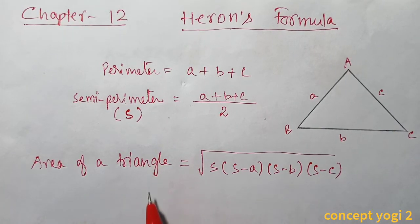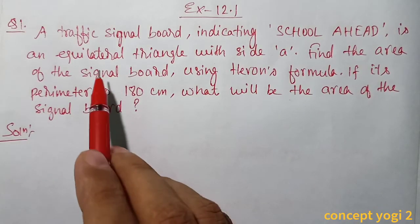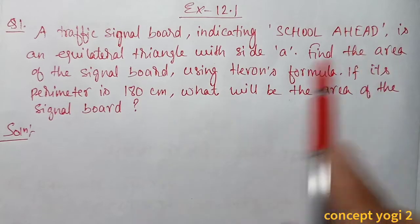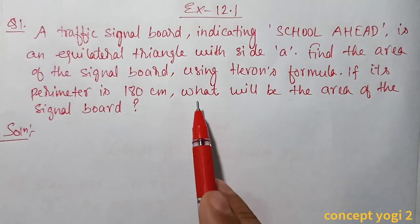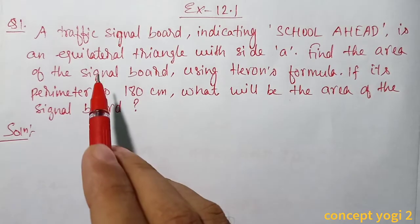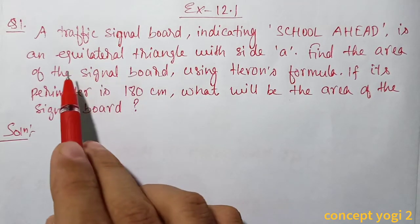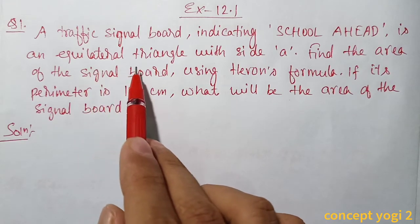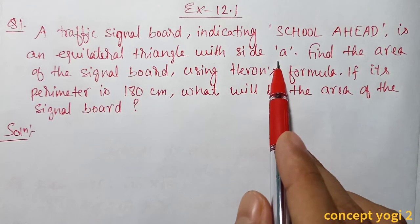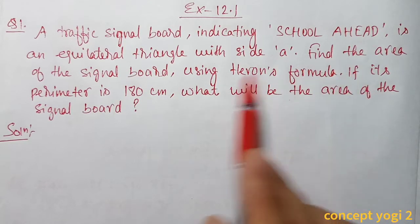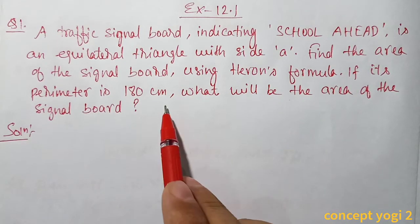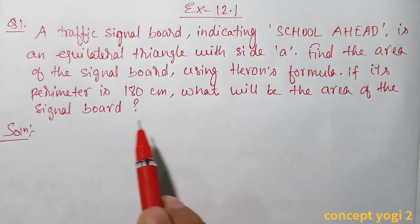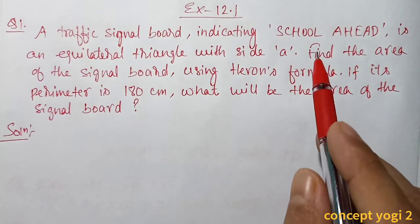Question number one: A traffic signal board indicating 'School Ahead' is an equilateral triangle with side a. Find the area of the signal board using Heron's formula. The second part gives the perimeter and asks for the area. We will first solve part one, then part two.